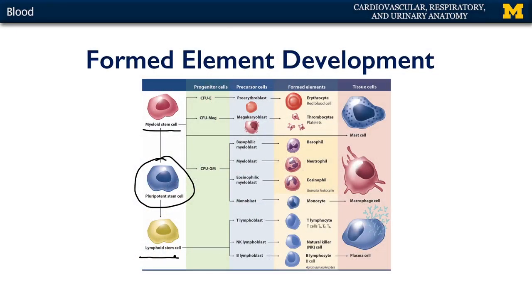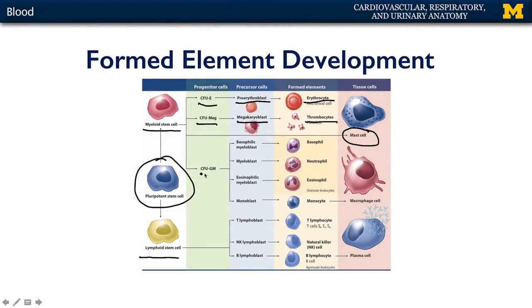Myeloid stem cells can give rise to colony-forming unit erythrocytes or colony-forming unit megakaryoblasts, which give rise to pro-erythroblasts and megakaryoblasts respectively, ultimately giving rise to either erythrocytes or thrombocytes. Also derived from myeloid stem cells are mast cells, which are an important and sometimes annoying component of the immune system because they secrete histamine, that substance that makes us itch. Also derived from myeloid stem cells are colony-forming units that will give rise to a number of different granular leukocytes.